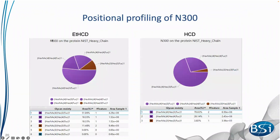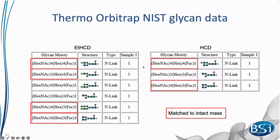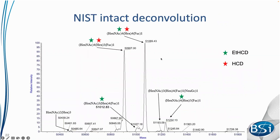Looking at positional profiling data at the asparagine residue in the heavy chain, the three most abundant glycans are identified in both samples, whereas the ETHCD method revealed two additional glycans. Highlighted in red are glycans identified from the peptide digest that also match to an intact mass — four from ETHCD and only two from HCD. Green stars on the LC-MS spectra indicate identification from ETHCD MS2 data; red stars indicate identification from HCD data.